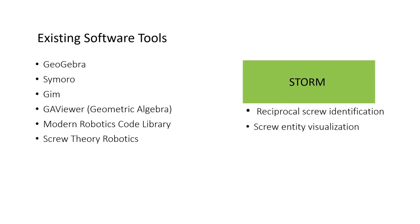The first question that probably arises is: why another toolbox for robotics, as there are existing software tools from commercial and academic sides? Existing frameworks target the design and synthesis of kinematic mechanisms from a computational point of view with position, velocity, kinematics and dynamics. They also describe geometric problems using geometric algebra and Lie group representations. However, a tool has not been developed to support reciprocal screw identification.